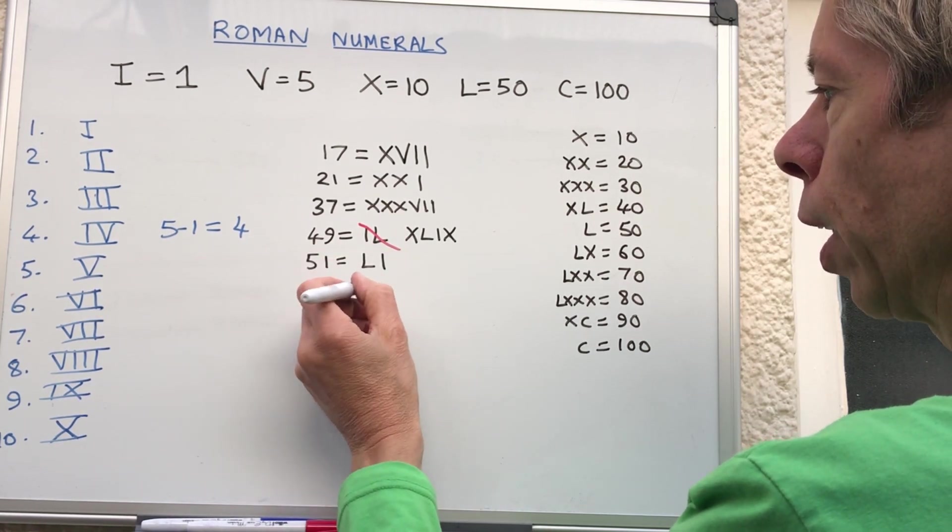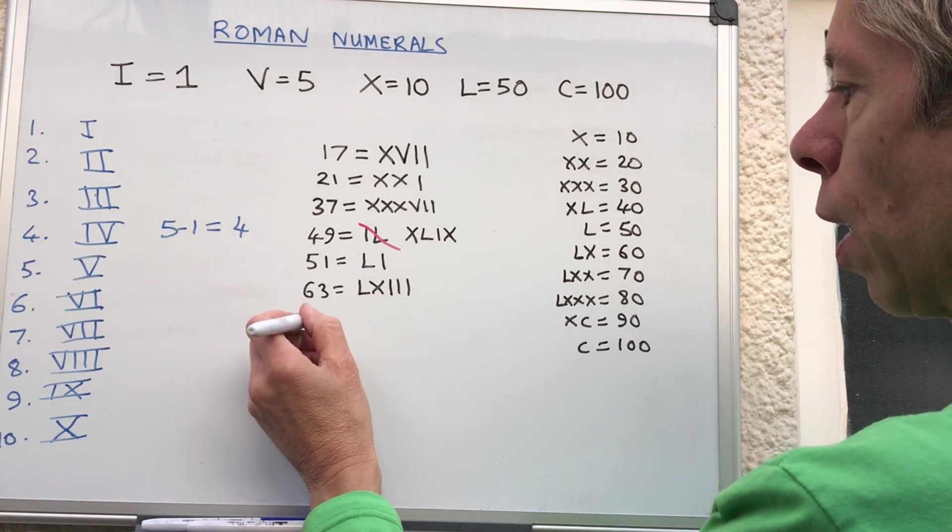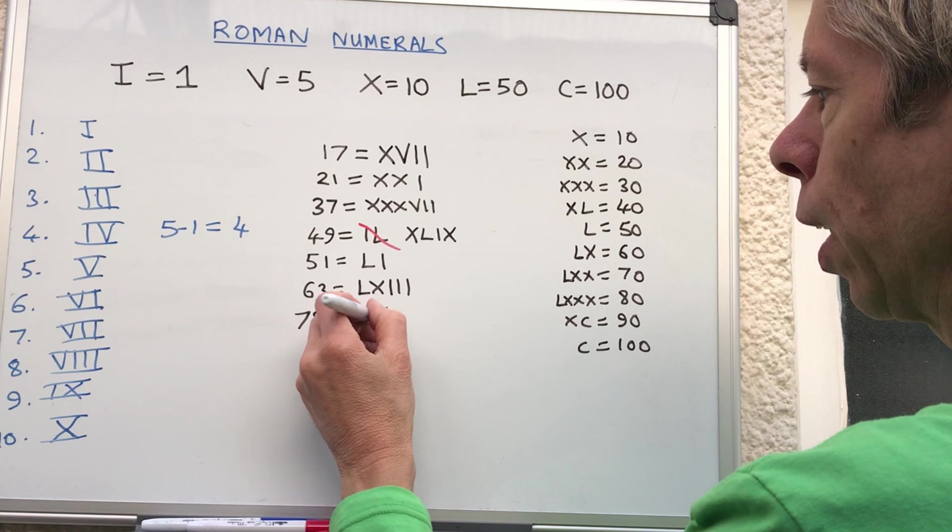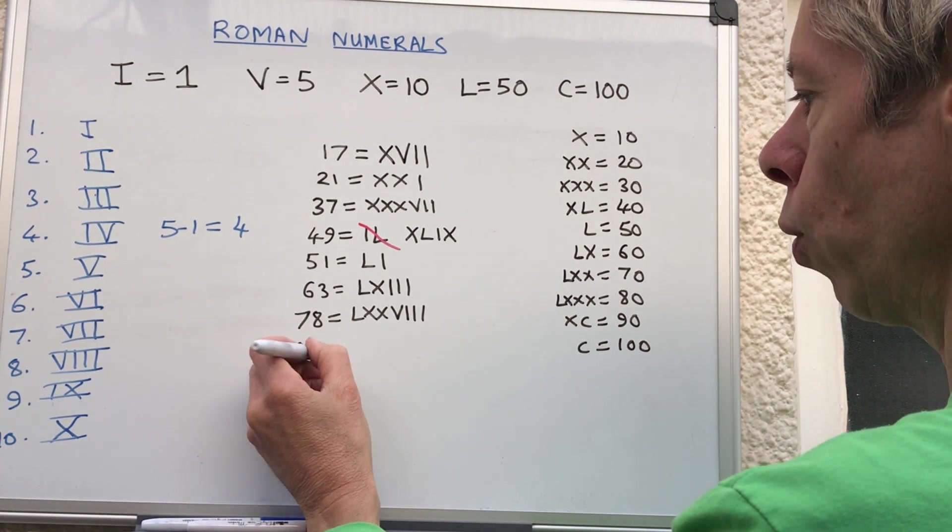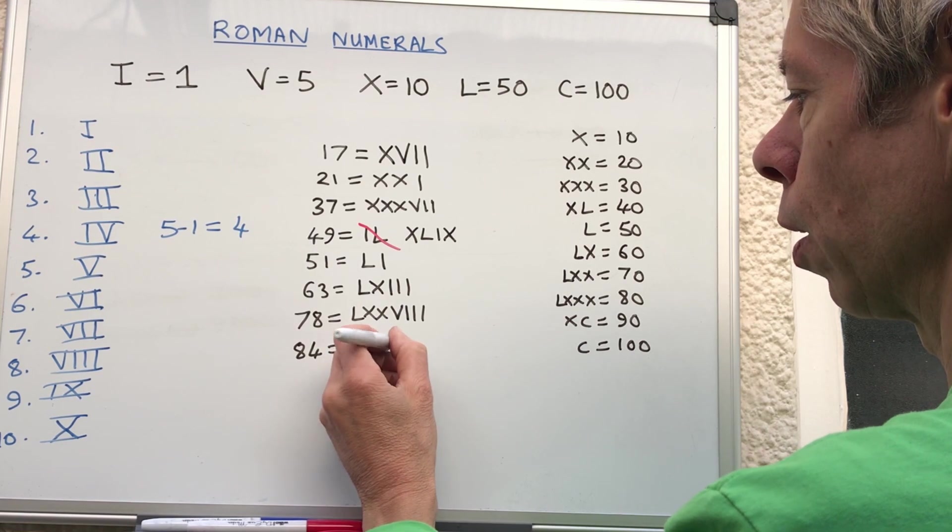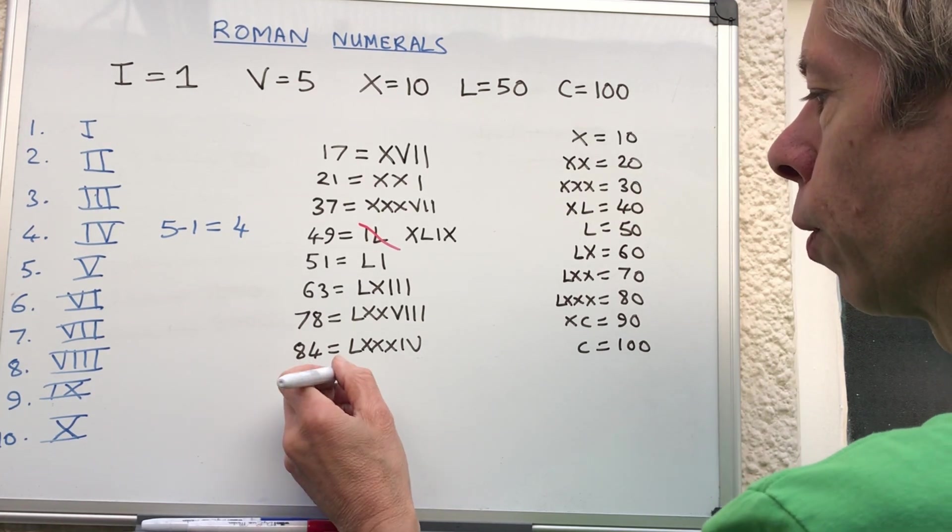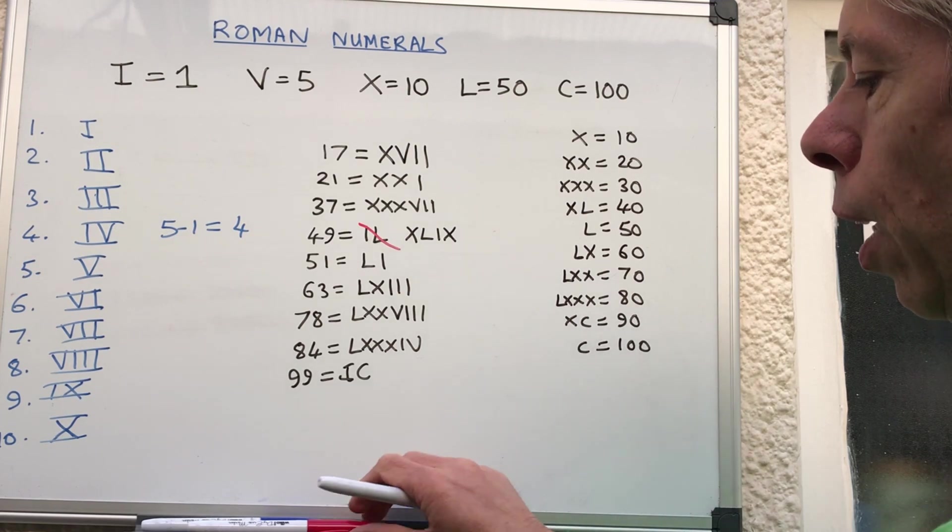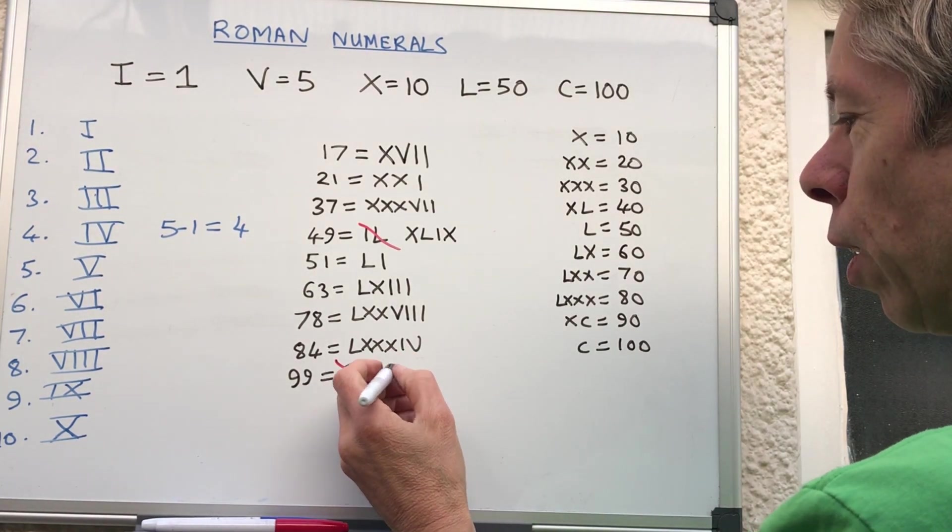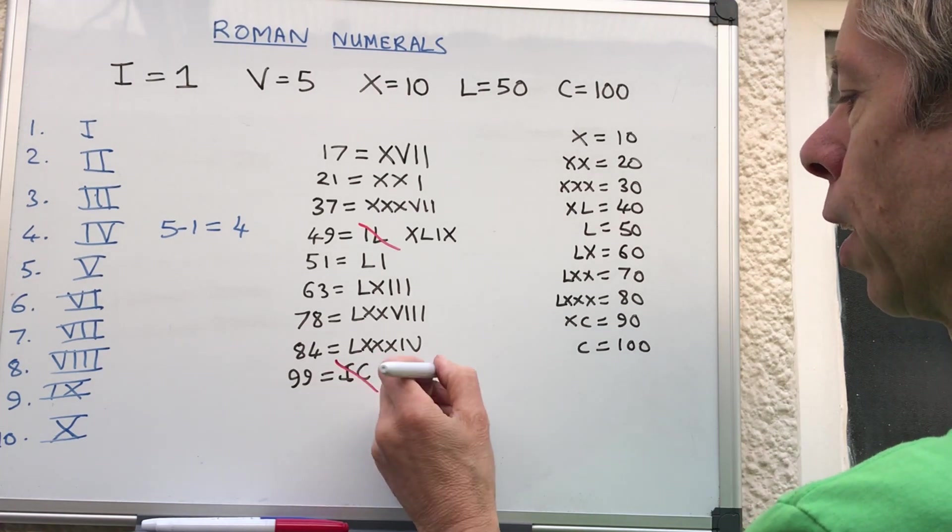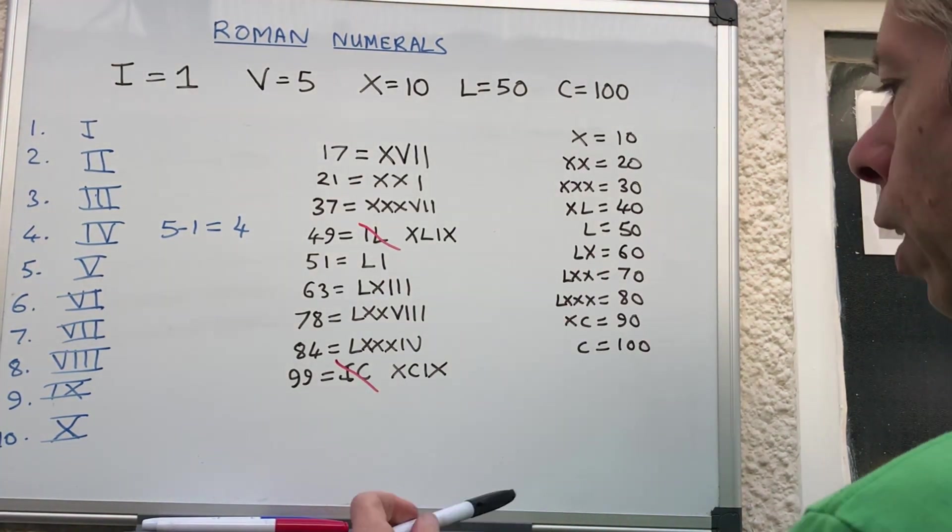63 - you've got 60 and then 1, 2, 3. 78 would be 70 and then 5, 6, 7, 8. 84 would be 80 and then 4. 99 - as I said you can't do IC, you're not allowed to do that because that doesn't mean anything. You need 90, so XC, and then 9 would be IX. That is some random numbers.